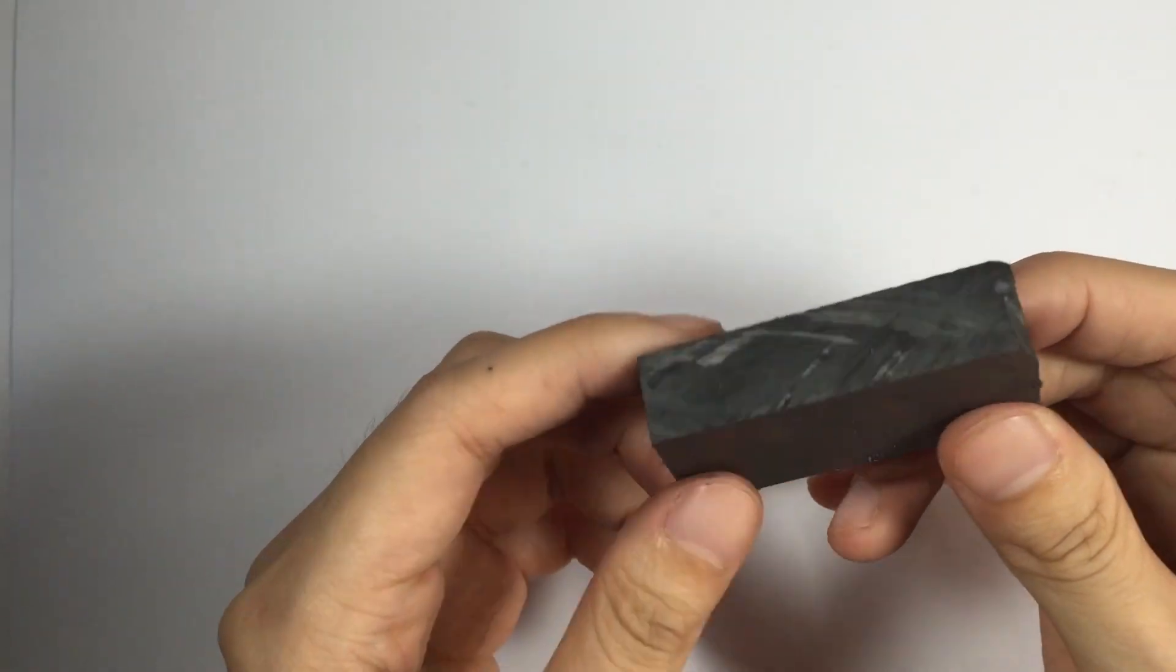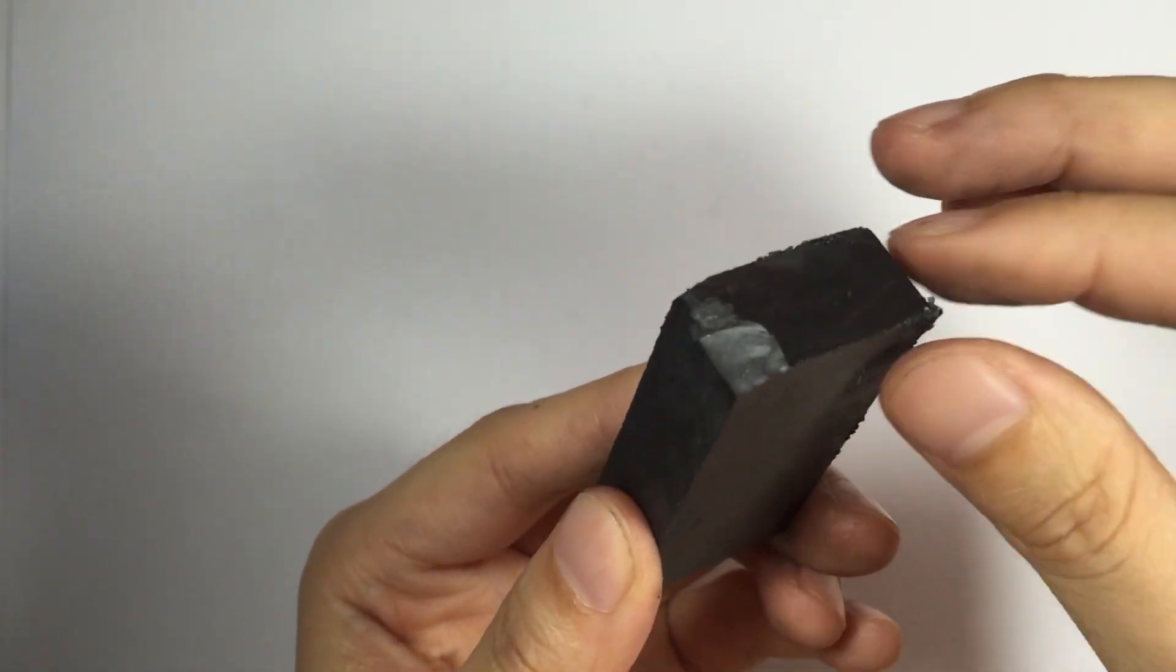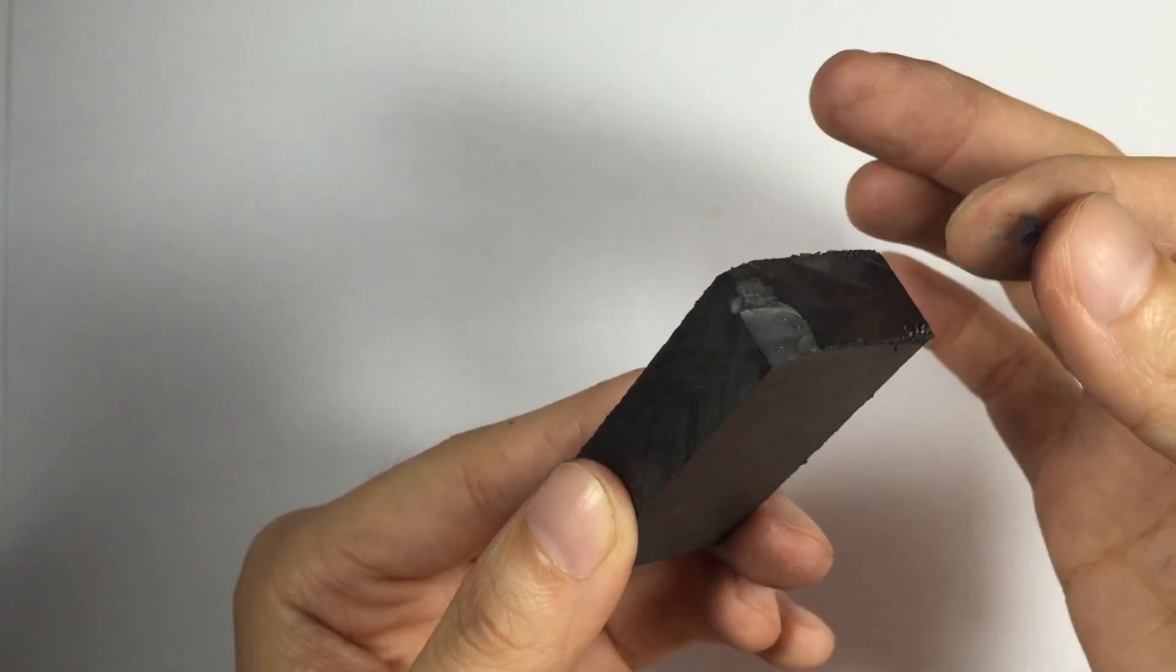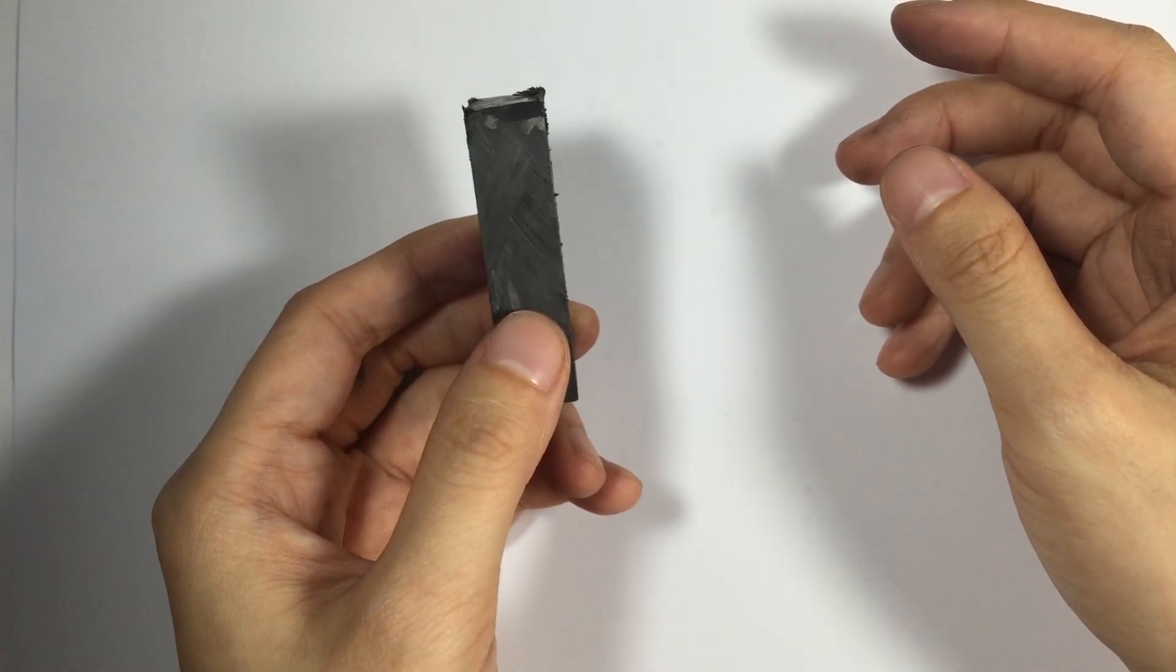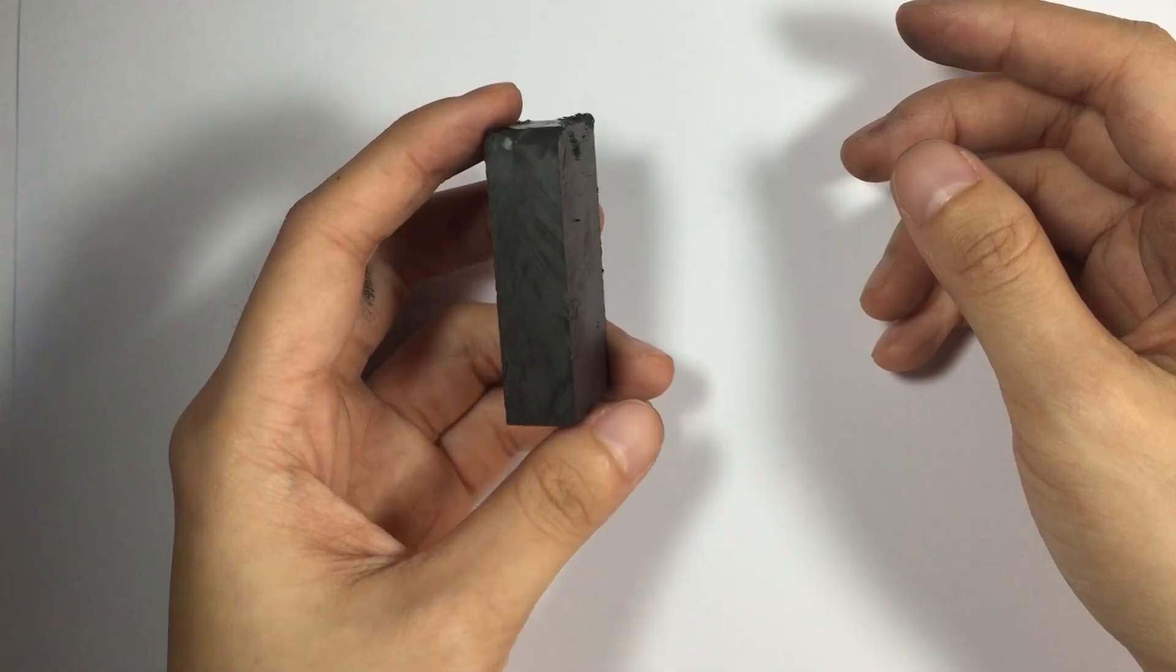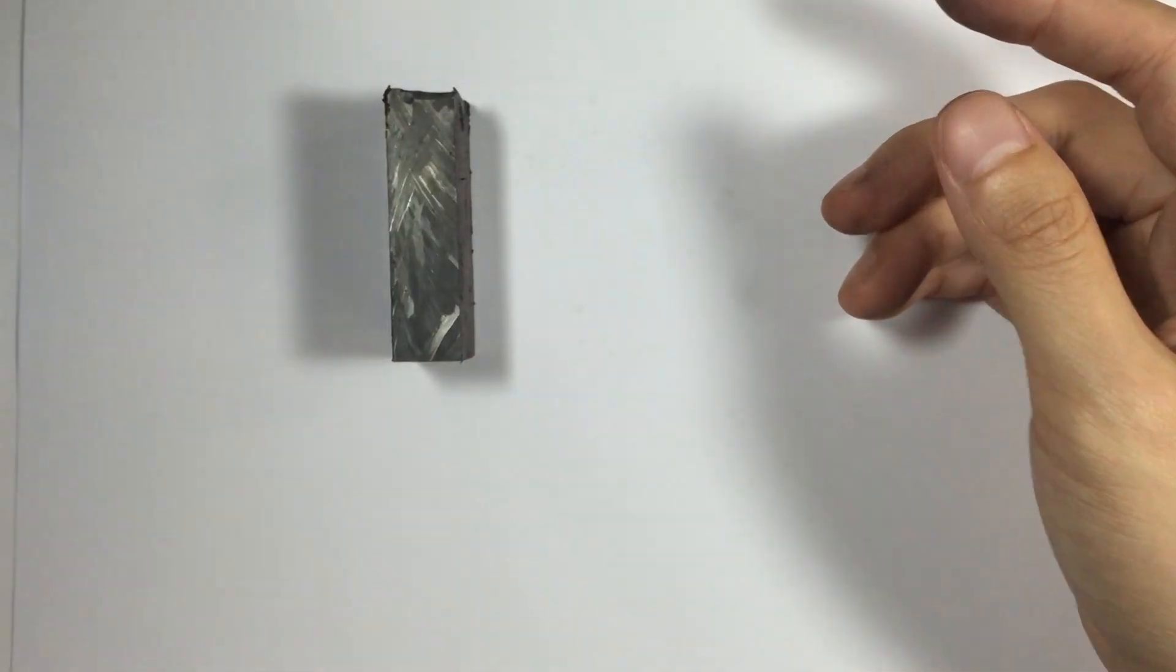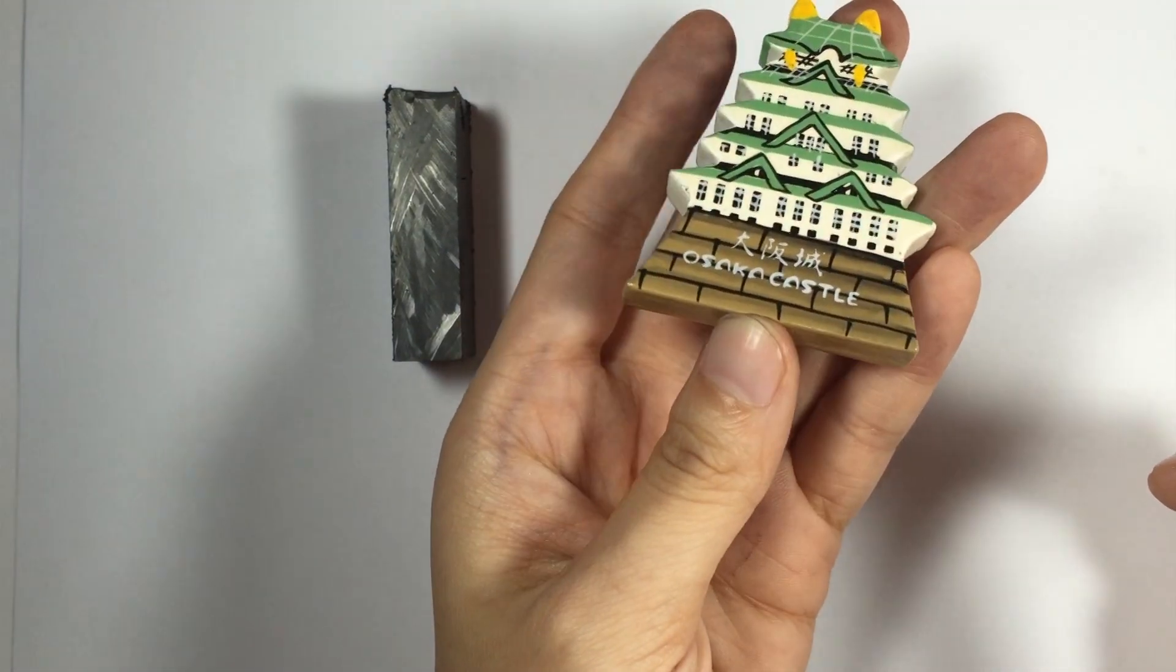So this is the ferrite magnet. It's usually color black. It's also very brittle. I accidentally cracked it. So it has these little ferrite powder in it due to the crash. A ferrite is sometimes called a ceramic magnet. It's usually very heavy. But in terms of strength, compared to the neodymium magnet, it's not as strong. Which is why sometimes you see it being used in fridge magnets like this one.